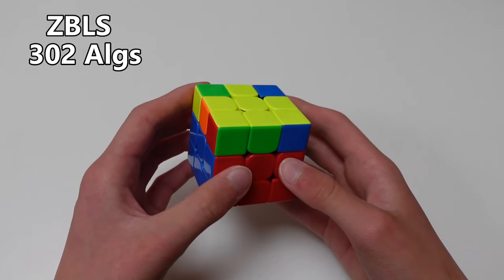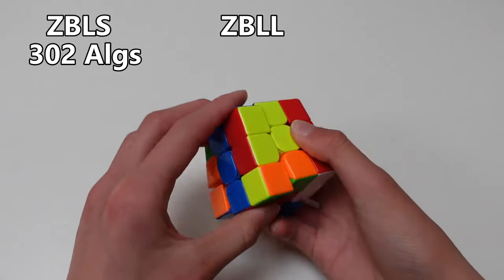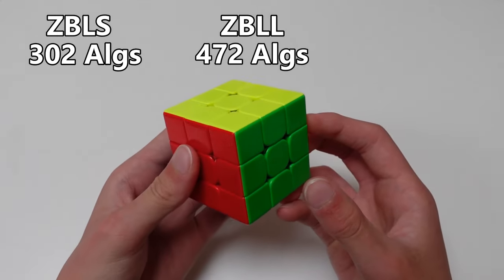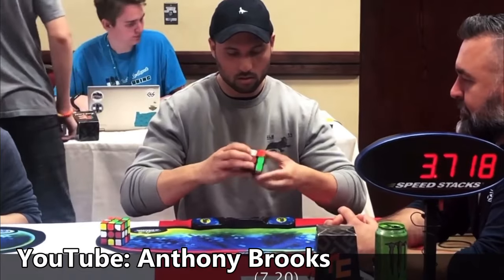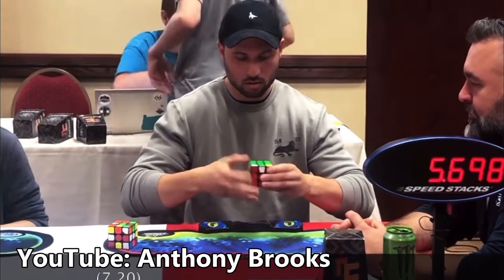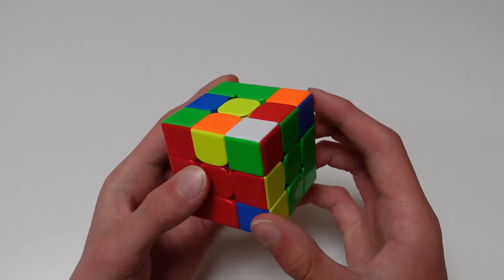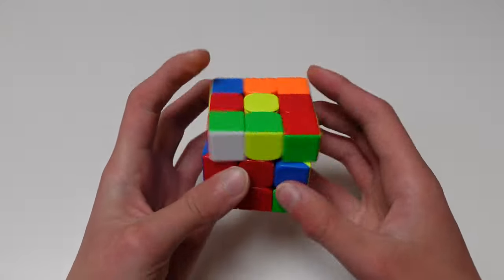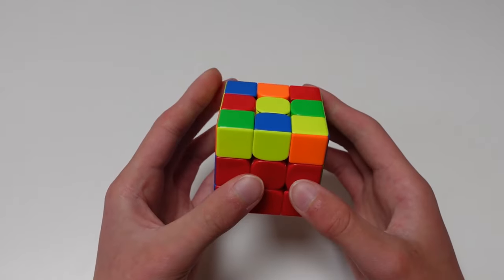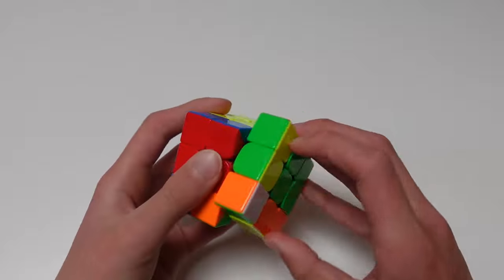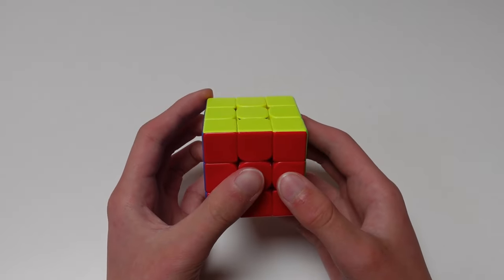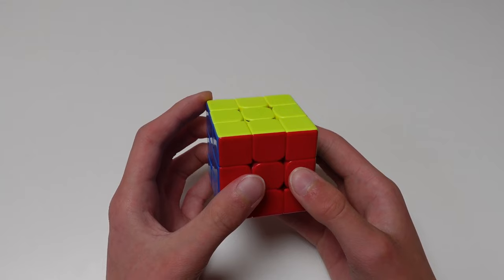From here, you need to know full ZBLL, which is another 472 algorithms. Understandably, very few people use this method. The fastest of these people is Anthony Brooks, who averages around 8 seconds. There is also one-look last layer, where after doing the first two layers, regardless of what case you get, you solve the whole thing with just one algorithm. However, it requires you to learn around 4000 algorithms, and unsurprisingly, no one is yet to learn them all.